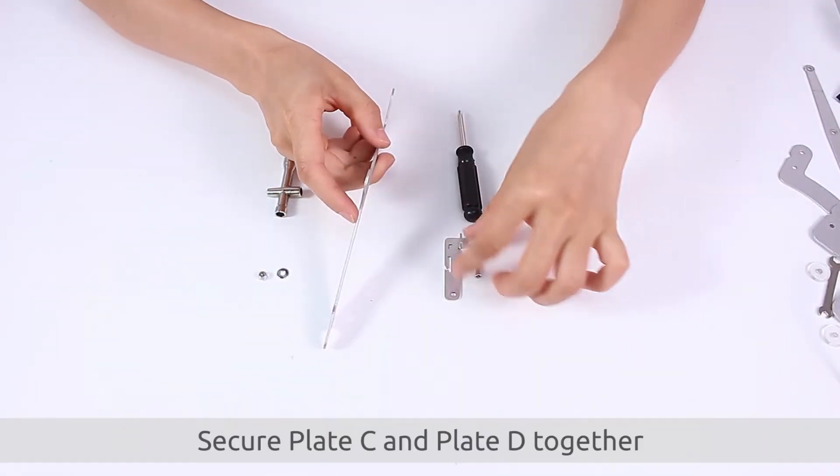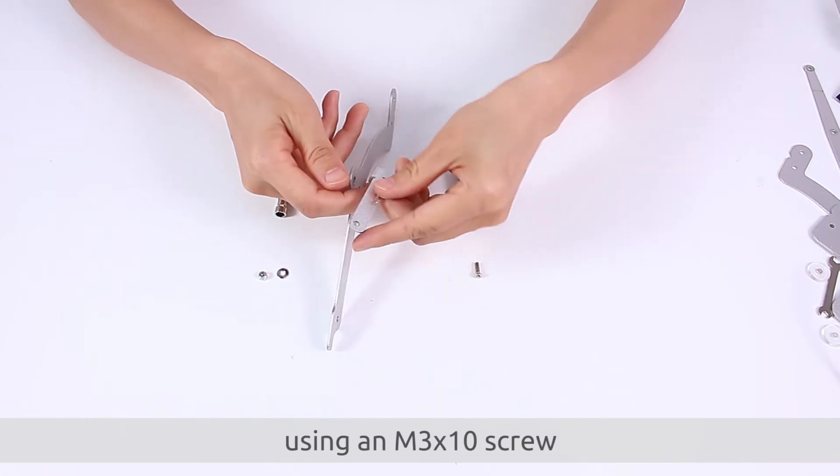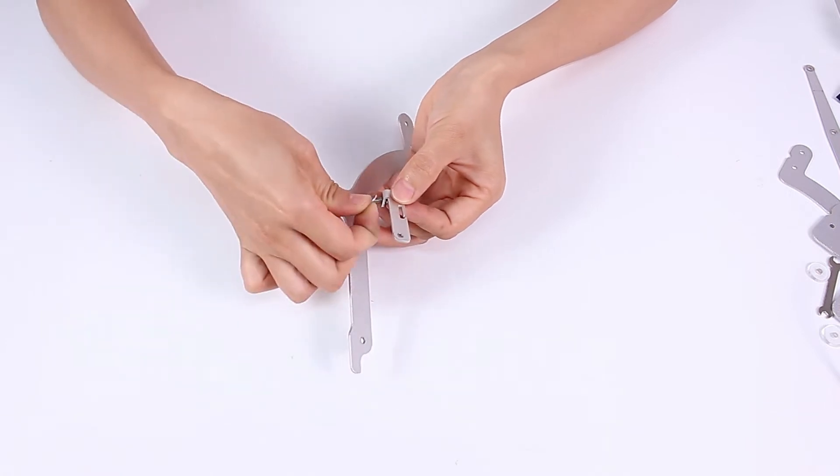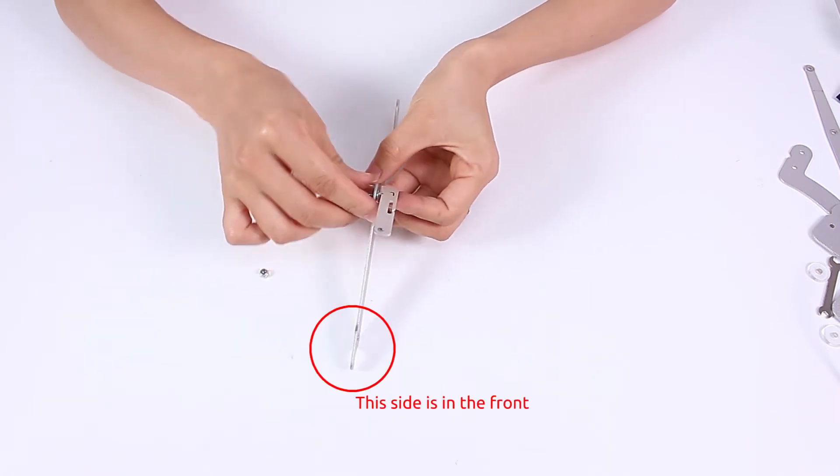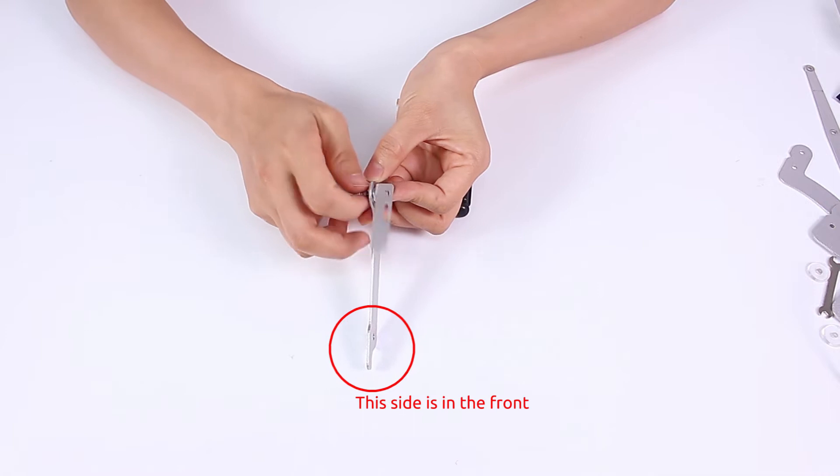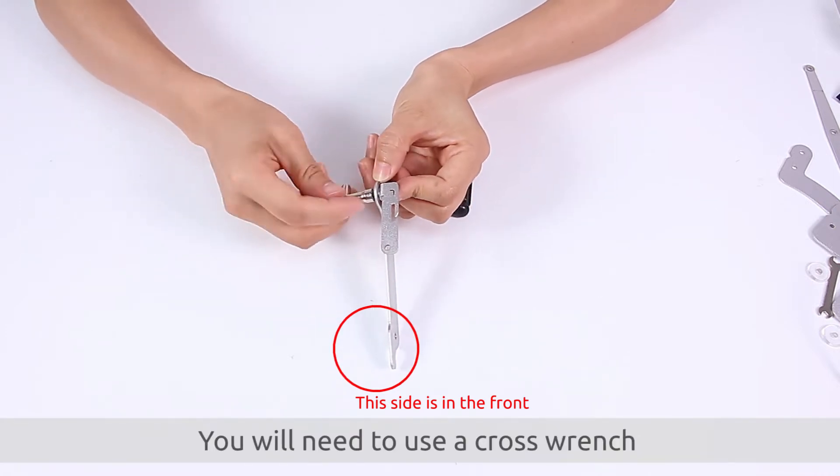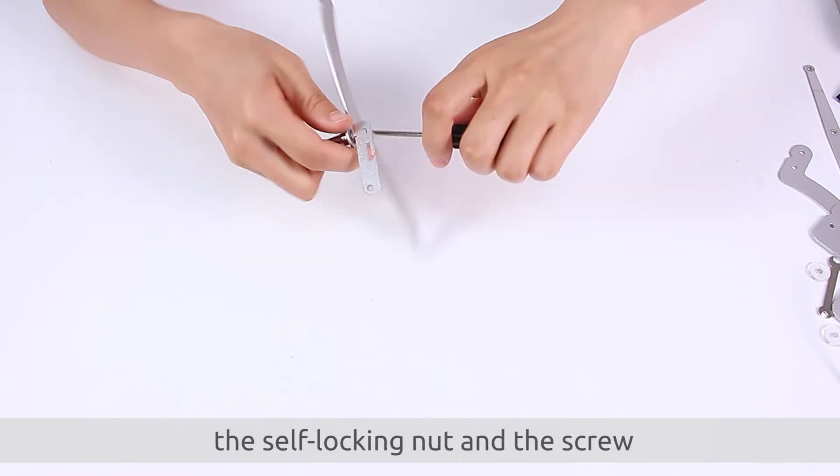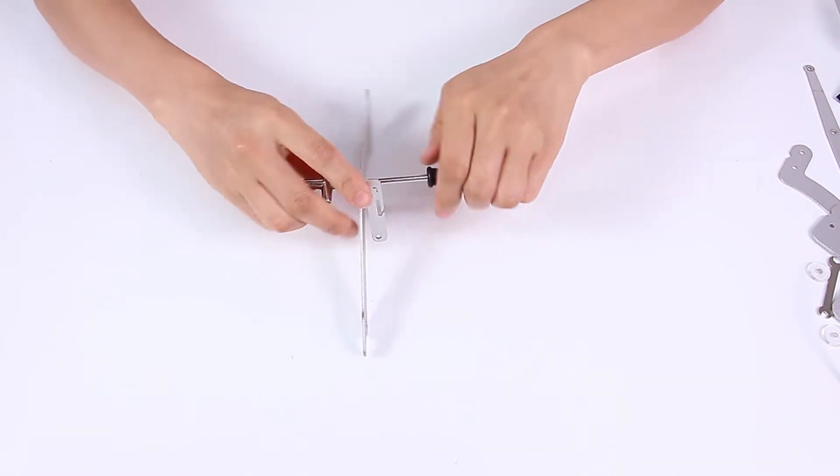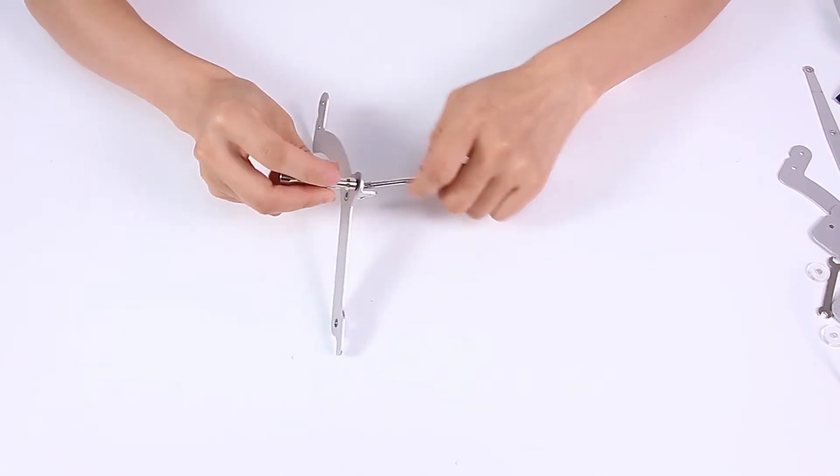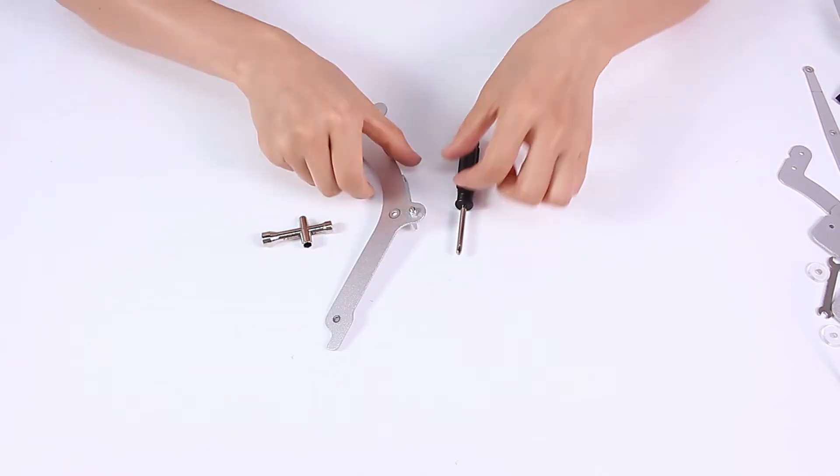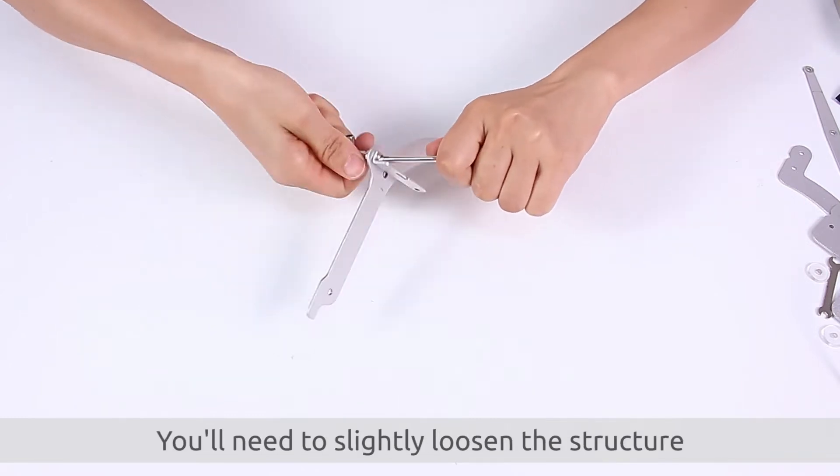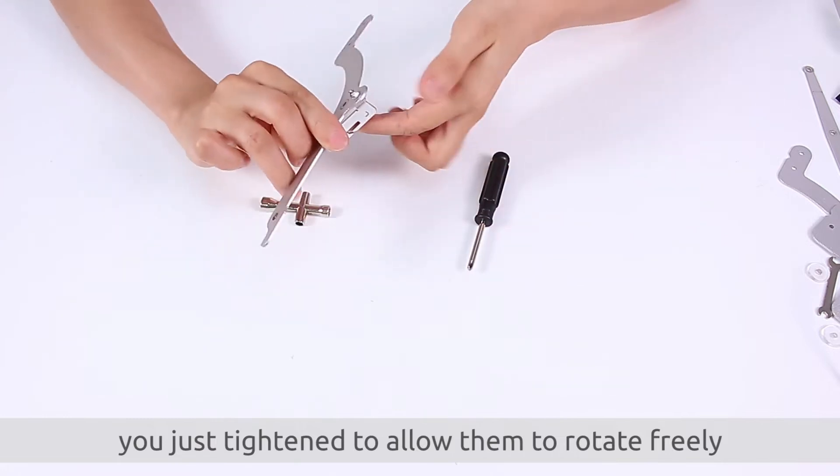Secure plates E and plate D together using an M3 x 10 screw, a metal washer, and a self-locking nut. You will need to use a cross wrench and a screwdriver to tighten the self-locking nut and the screw. Now for an important step. You'll need to slightly loosen the structure you just tightened to allow them to rotate freely.